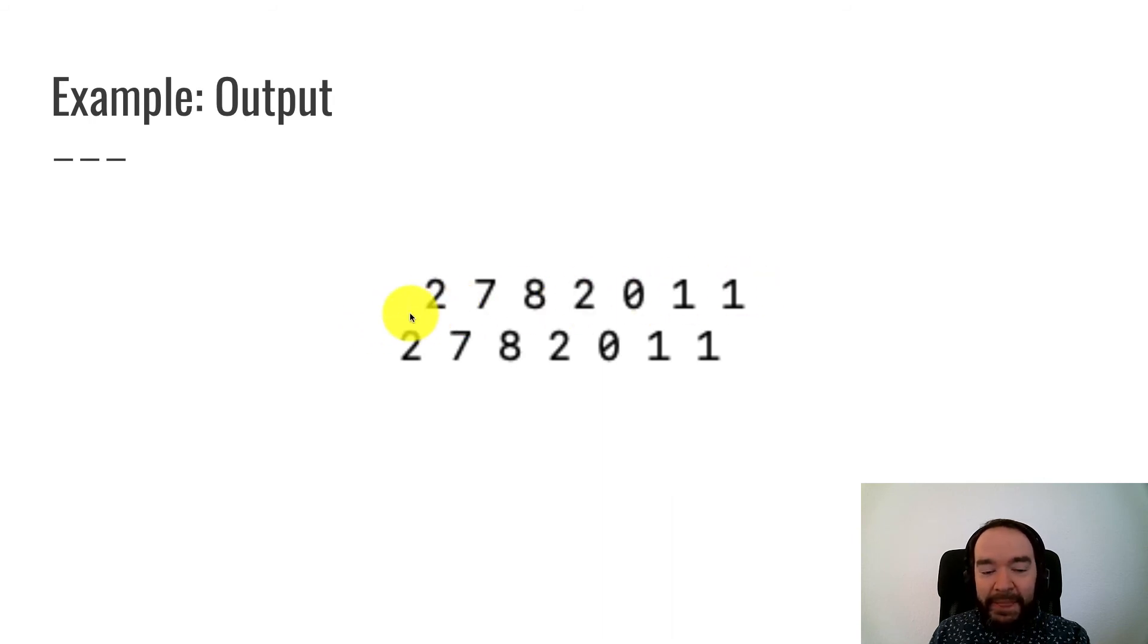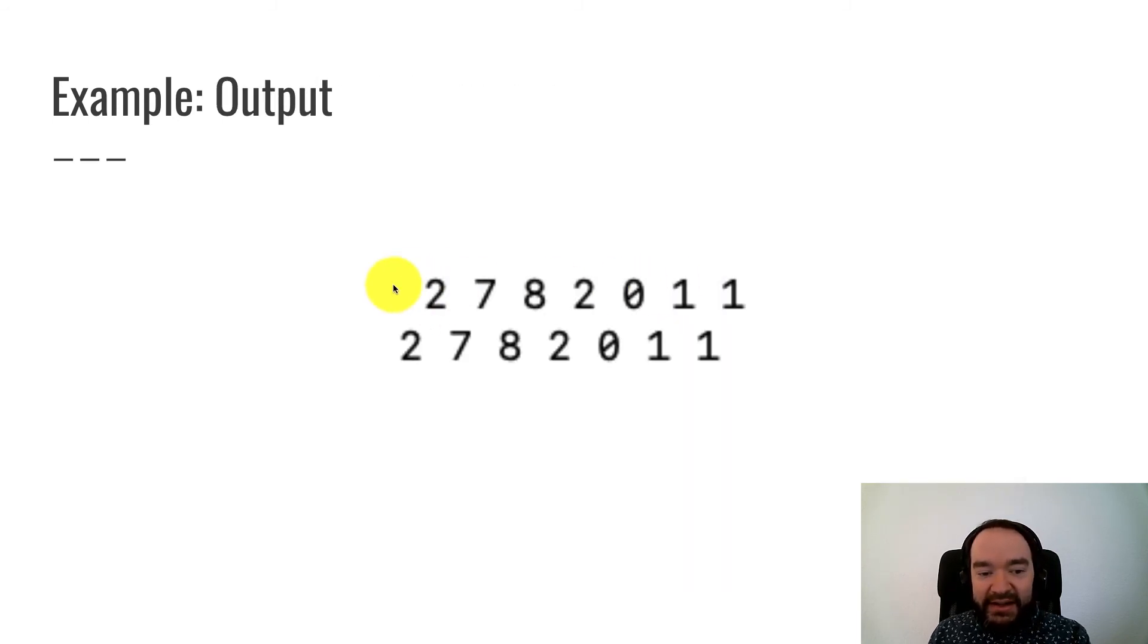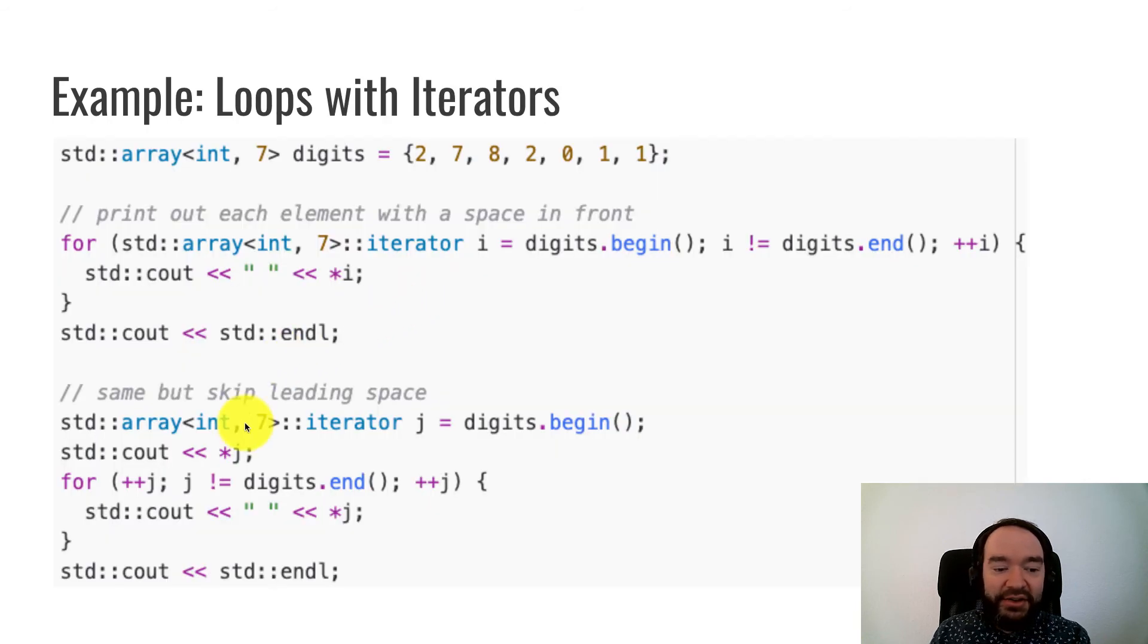There's a space at the beginning, and then it goes space, digit, space, digit, and it works. It prints out those digits. Now, I don't really like this untidiness of this extra space. So here's an alternative way that also shows a different way of manipulating iterators to avoid that space.